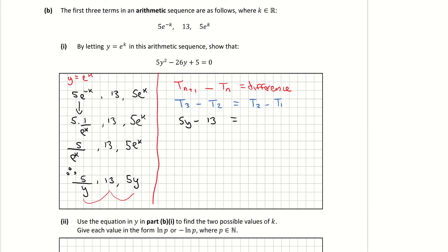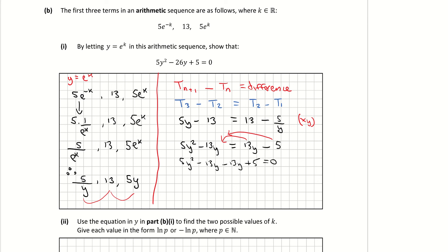So 5y minus 13 equals 13 minus 5 over y. Multiplying across the whole line by y: 5y times y gives 5y², 13 times y is 13y, another 13y, and 5 over y times y leaves just 5. Rearranging and moving everything to the left: 5y² minus 13y minus 13y plus 5 equals 0, which gives 5y² minus 26y plus 5 equals 0 — exactly what was required.